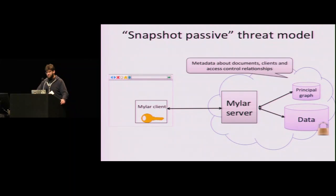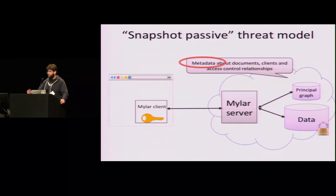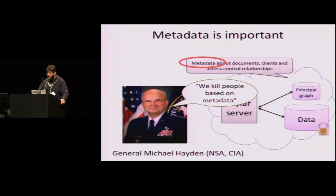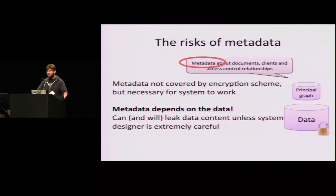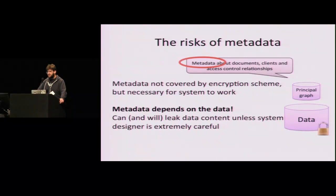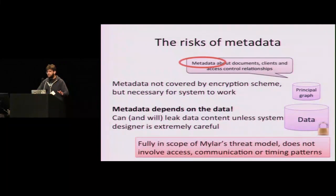Our attack in the snapshot passive threat model is simple. The attack uses the metadata I mentioned before. This metadata is crucial for the system to function correctly, but it's not encrypted — existing systems don't bother to encrypt the metadata. We all know how important metadata is. This metadata has inherent risks that haven't really been explored before. The metadata itself depends on the data, and if the system designers aren't careful, this metadata could by itself leak the information that the encryption scheme is intended to protect.